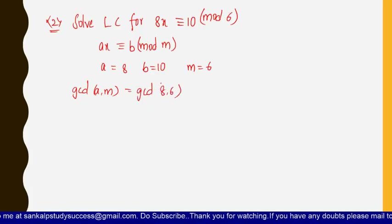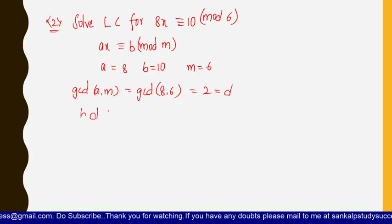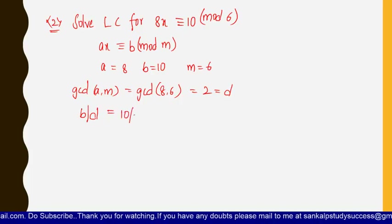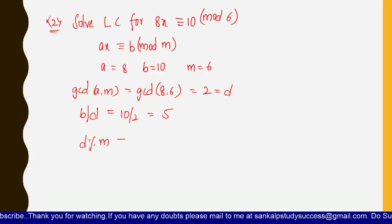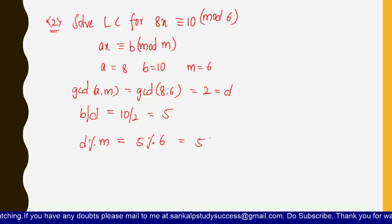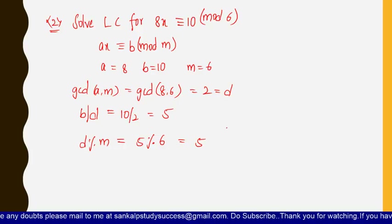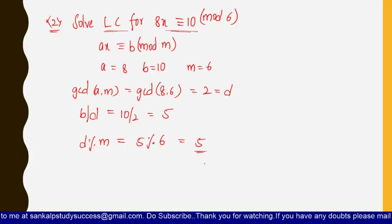gcd(8, 6) = 2, so d = 2. Now find b/d = 10/2 = 5. Then find d mod m = 2 mod 6 = 2, which means there are 2 incongruent solutions for this equation. So the linear congruence 8x ≡ 10 (mod 6) has two incongruent solutions.